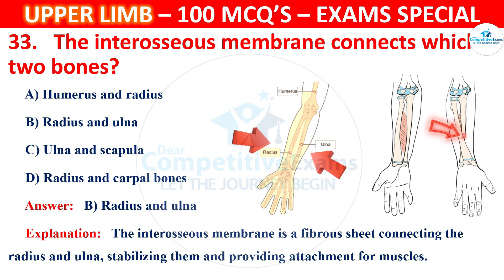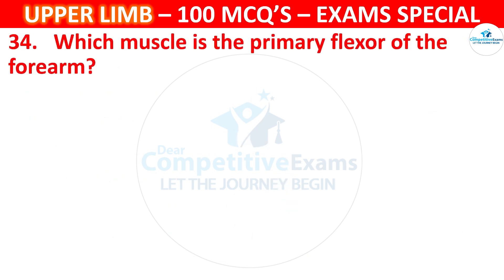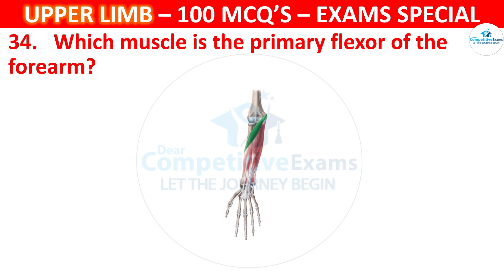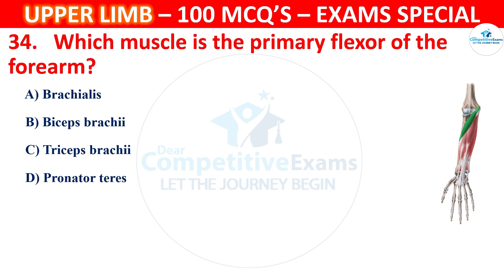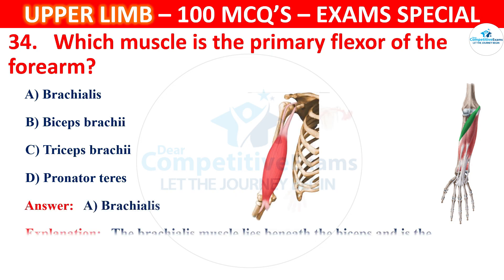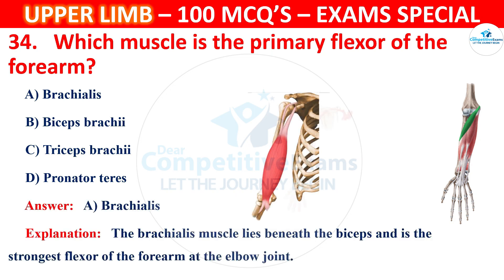Question number 34: Which muscle is the primary flexor of the forearm? Options: brachialis, biceps brachii, triceps brachii, or pronator teres. The correct answer is A, brachialis. The brachialis muscle lies beneath the biceps and is the strongest flexor of the forearm at the elbow joint.